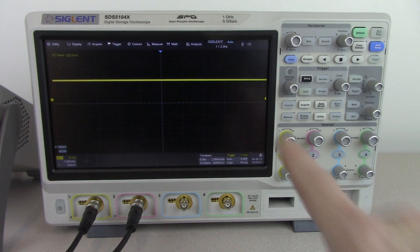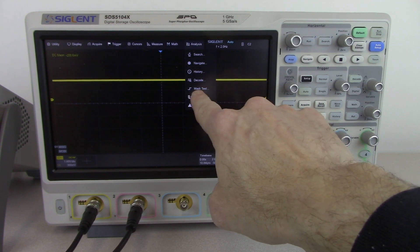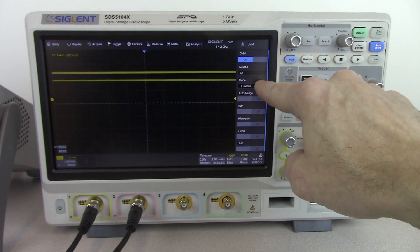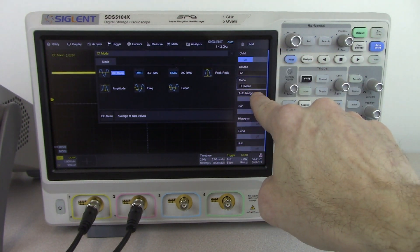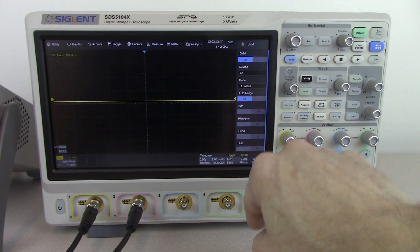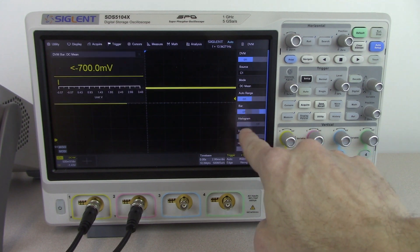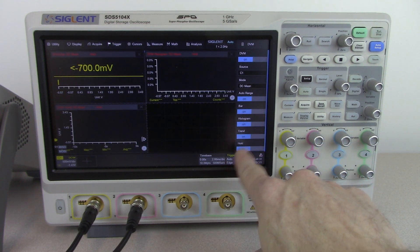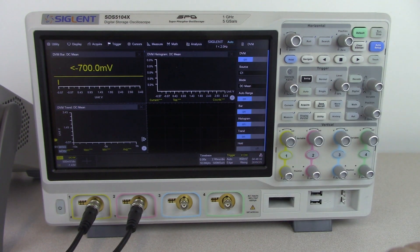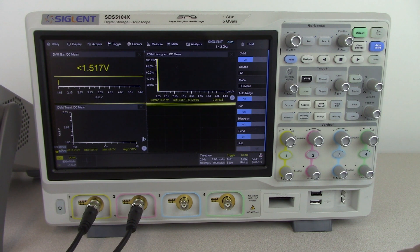We also have digital voltmeter capability. We're just going to press analysis, turn on DVM, and the digital voltmeter, we can measure a number of standard digital voltmeter functions. We can also enable auto-ranging, as well as a bar graph, a histogram, and trending, and DMM hold if we want to. So all of these capabilities are included with the SDS-5000X.